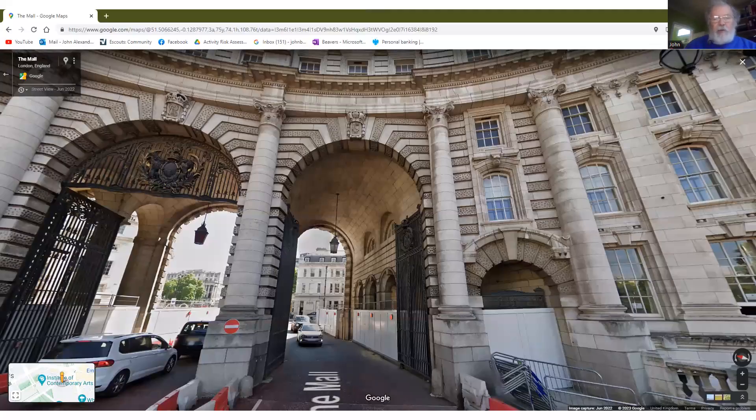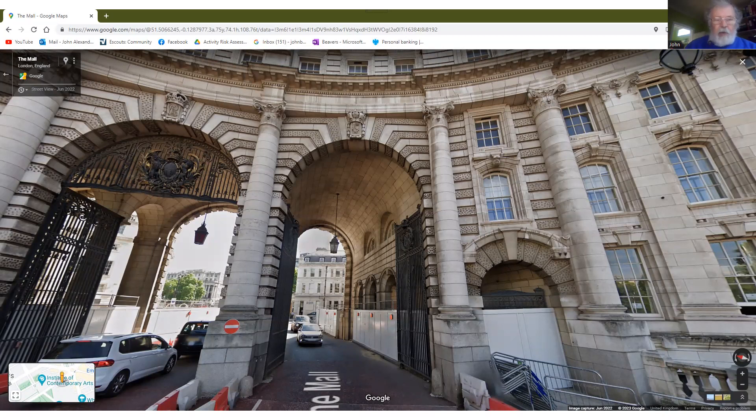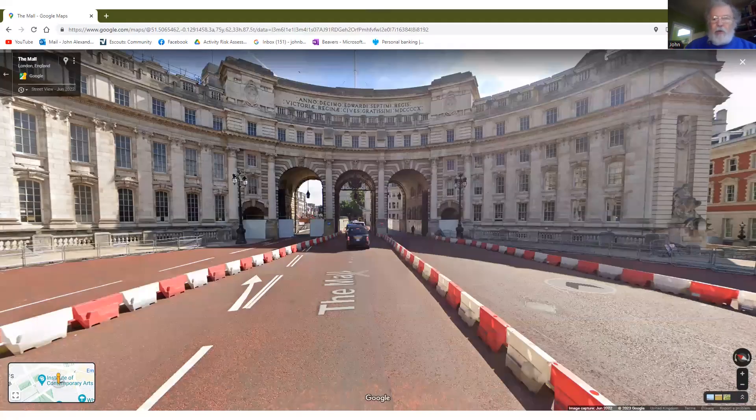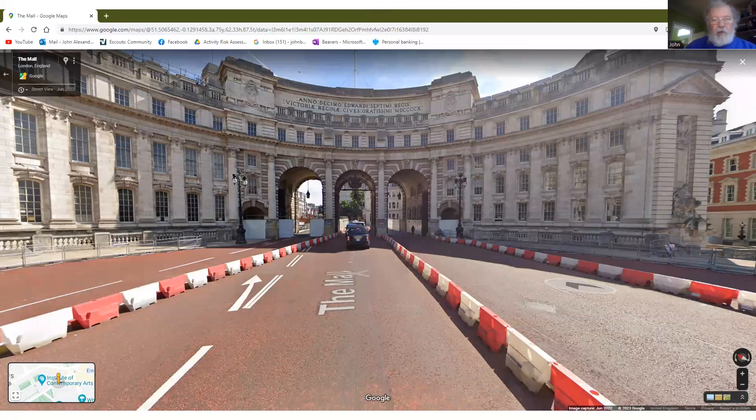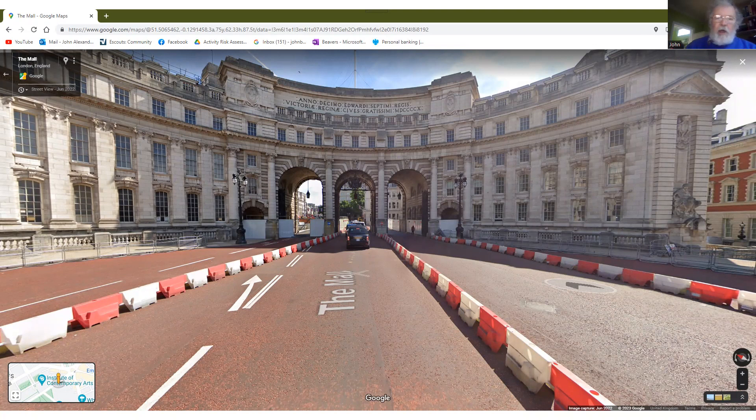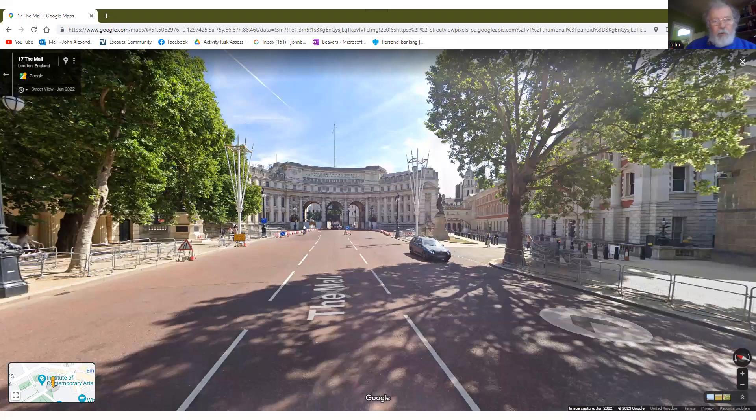So we start at Admiralty Arch and we walk backwards down the Mall, further and further away from the Arch. We can now get an idea that we're perhaps 50 metres away. And a little bit further, perhaps 120, 130 metres away, perhaps a bit more.